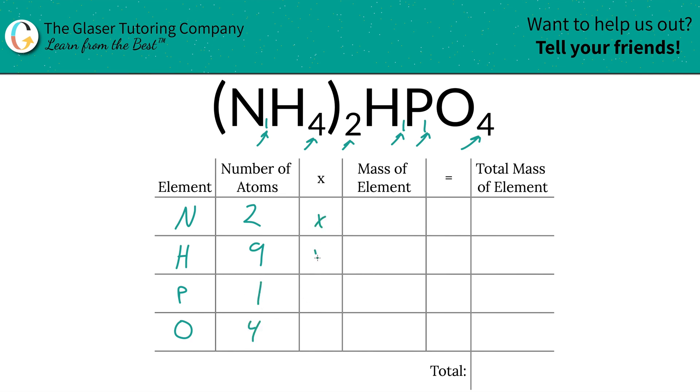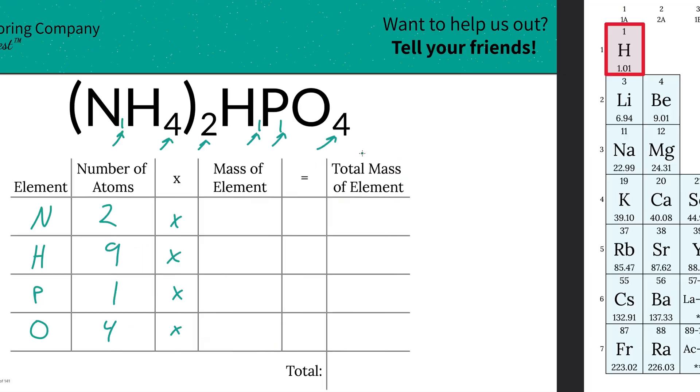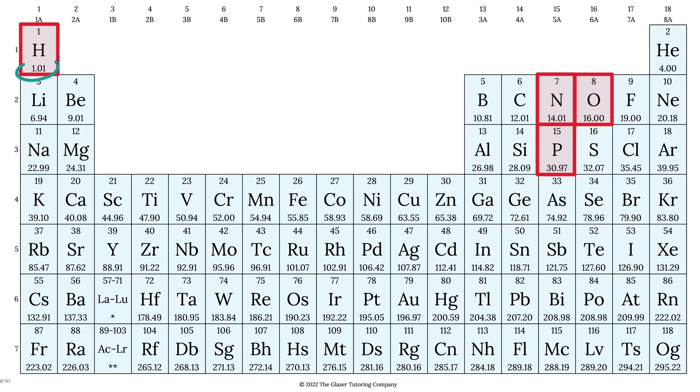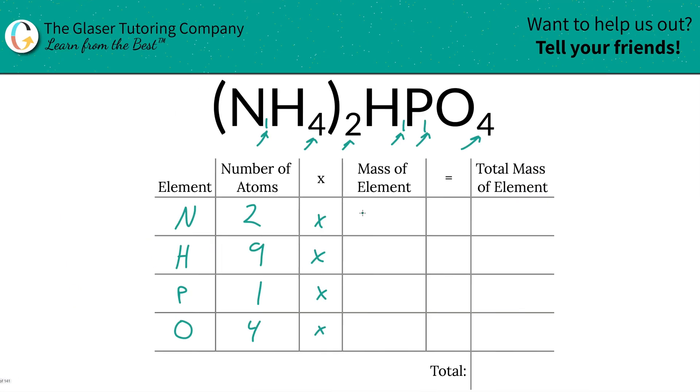Then we're going to take the number of atoms of each and multiply it by the mass of the element, and these masses are found on the periodic table. Here they are: hydrogen is 1.01, nitrogen is 14.01, oxygen is 16, and phosphorus is going to be 30.97. So that's what we're going to write down.